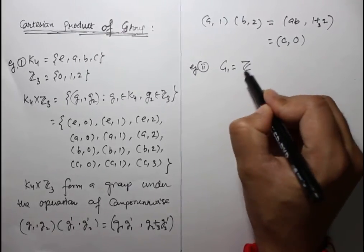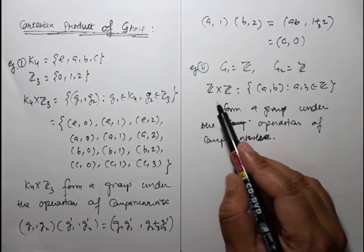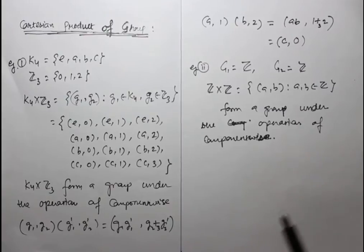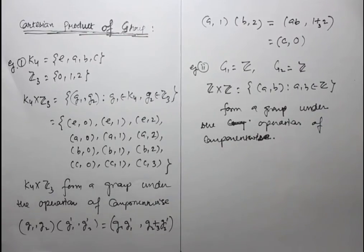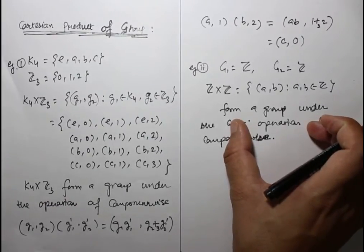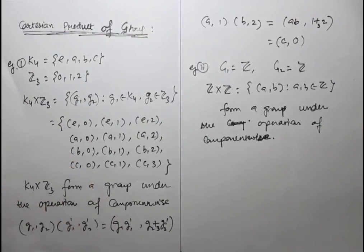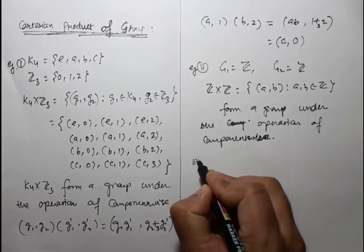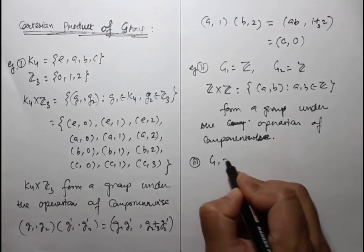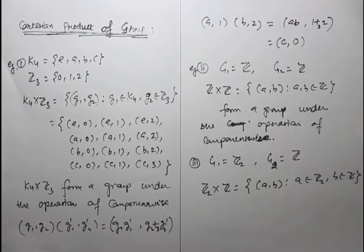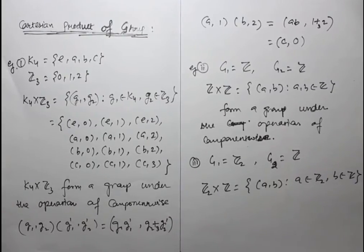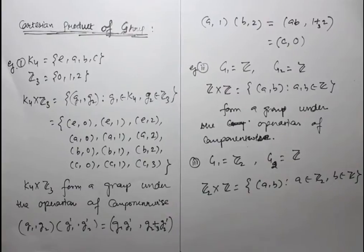If G1 equals Z, the set of integers, then Z cross Z forms a group under the component-wise operation. Since Z is infinite, Z cross Z has an infinite number of elements — this is an example of an infinite Cartesian product group. Also, Z2 cross Z forms a group where the first component uses addition modulo 2 and the second uses ordinary addition, giving an infinite order group.